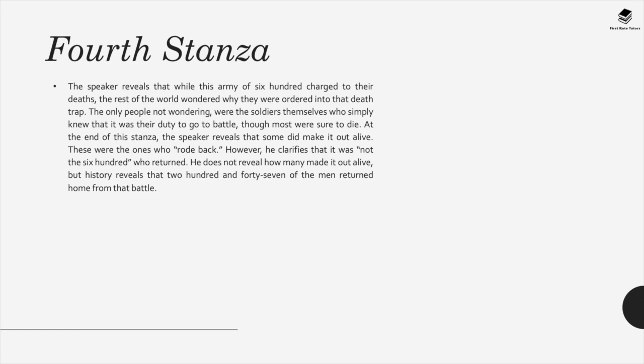In the fourth stanza, while this army of 600 charged to their deaths, the rest of the world wondered why they were ordered into that death trap — a criticism of the powers that gave the marching orders. The only people not wondering were the soldiers themselves, simply following orders. At the end of the stanza, the speaker reveals that some came out alive — those who 'rode back.' However, it's clarified it was not the 600, showing very few made it out alive.